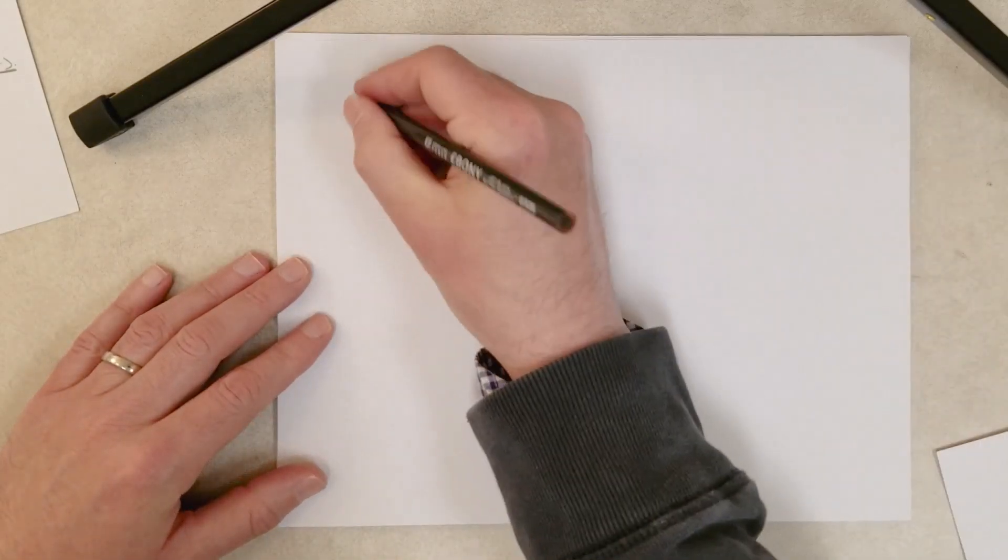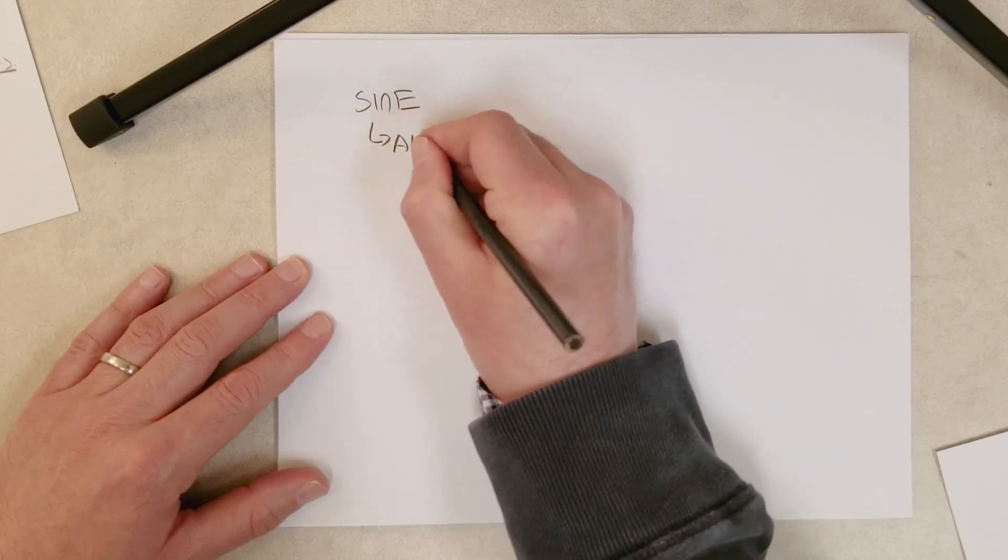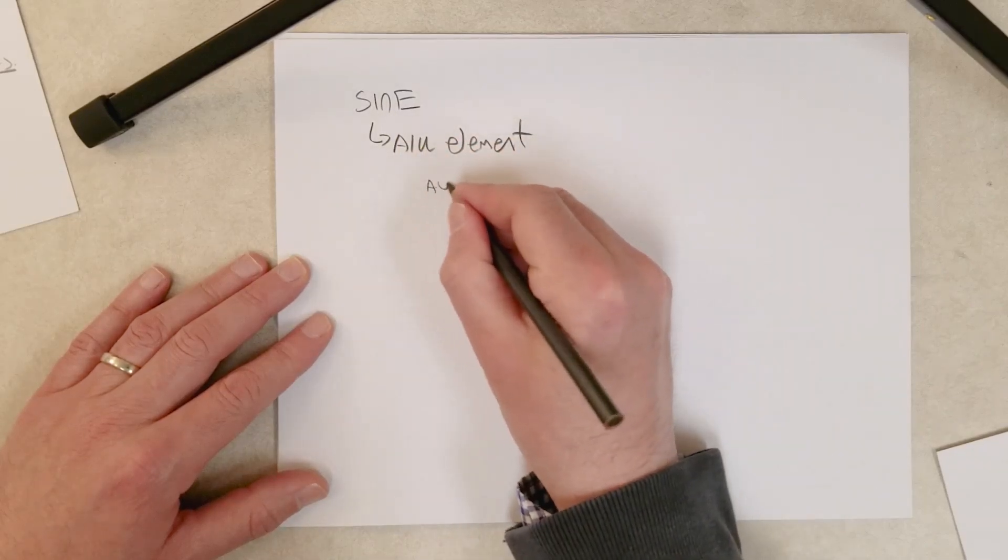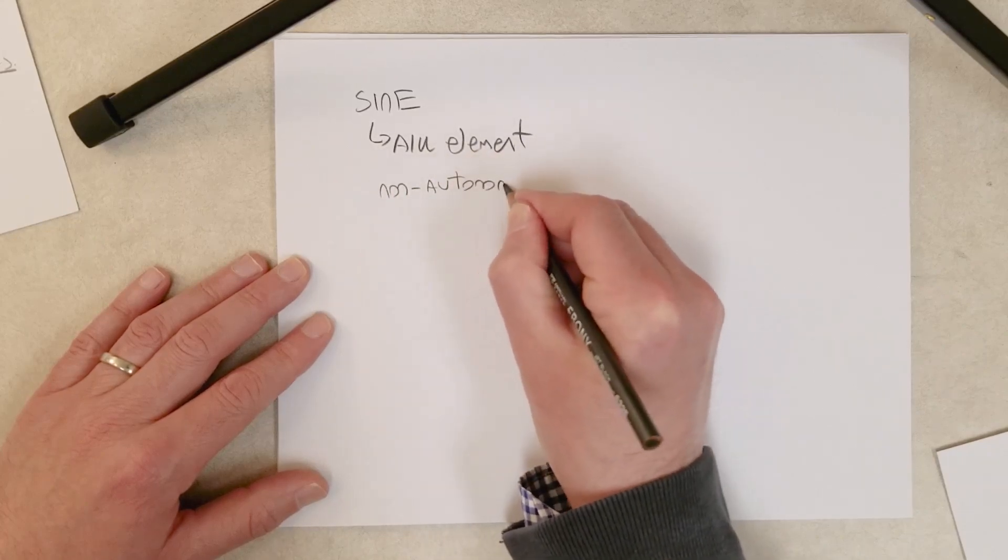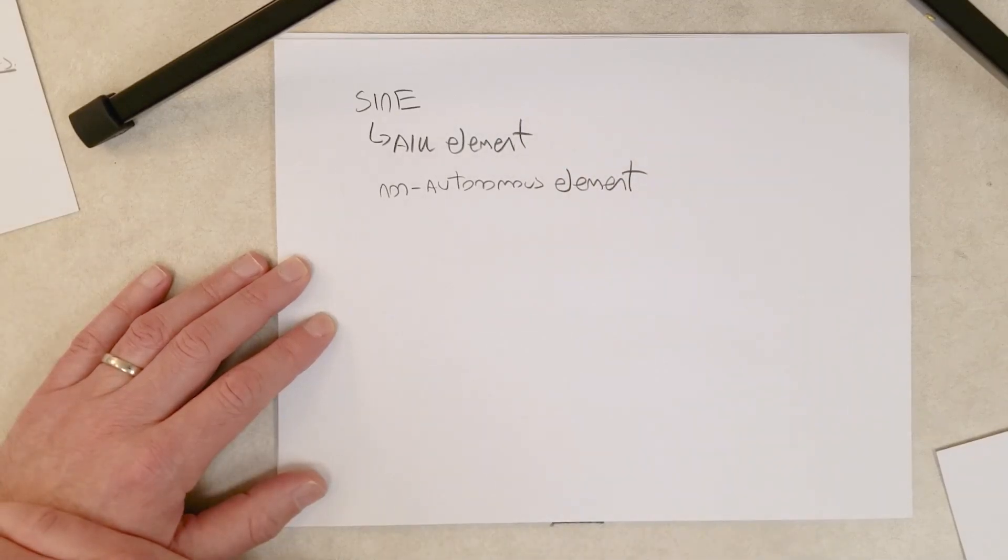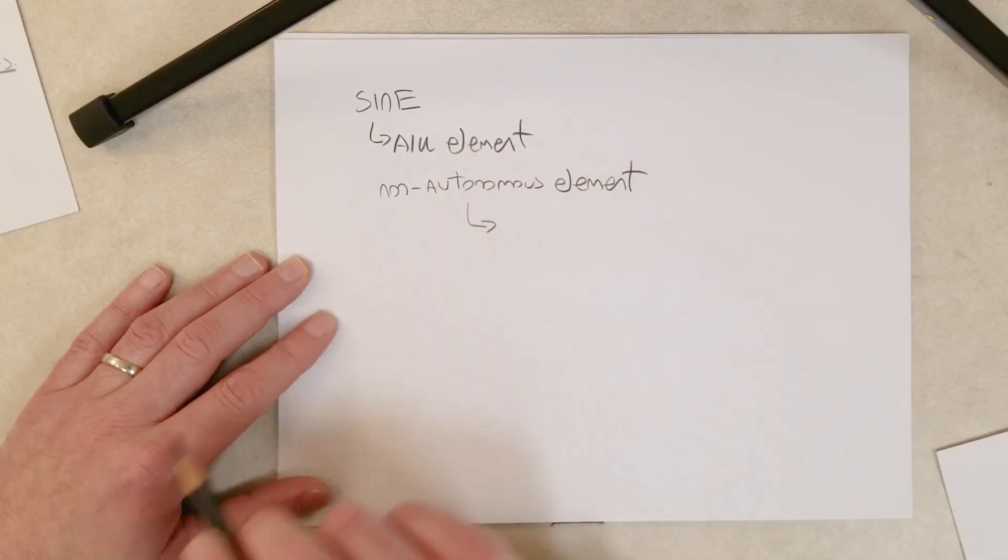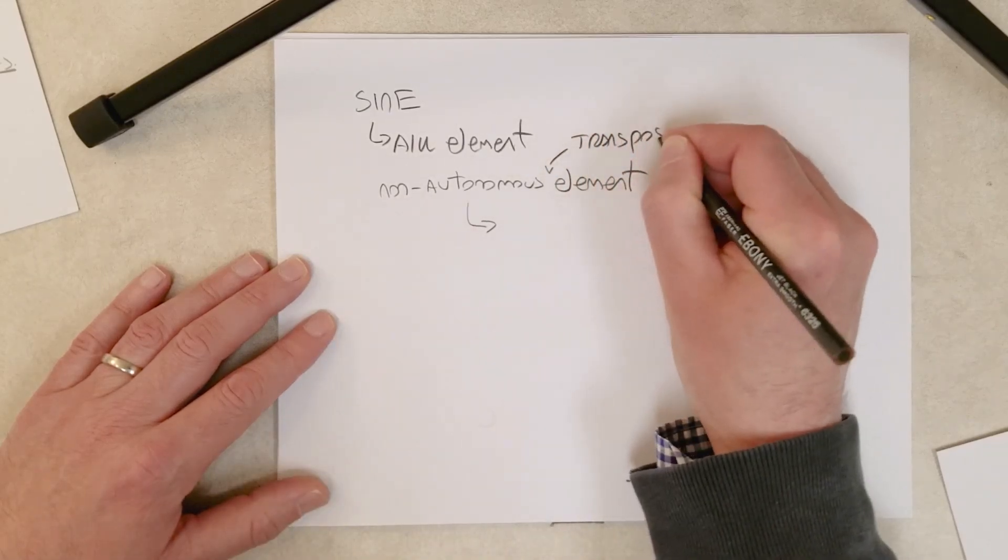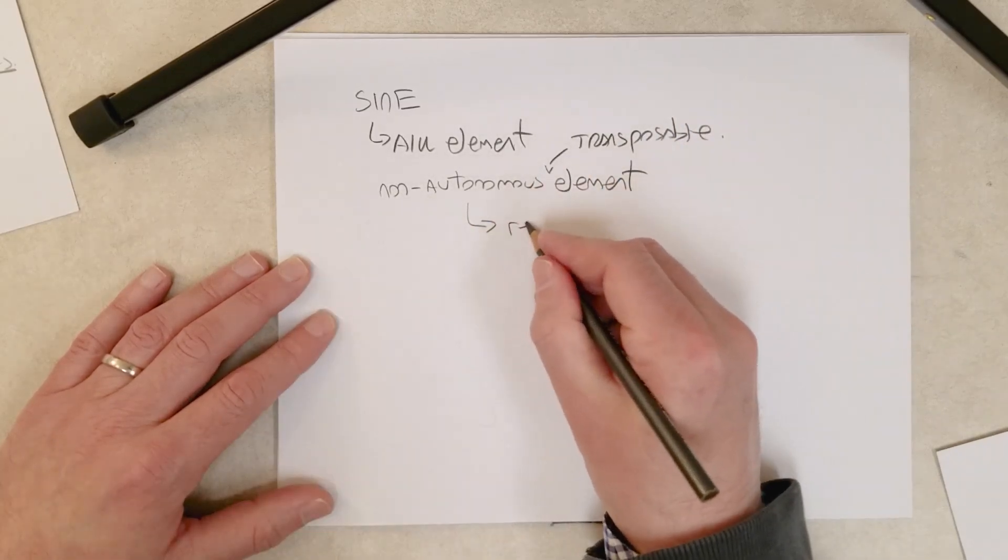ALU is an example of a SINE, and like most SINEs, ALU is what we call a non-autonomous element. What does that mean? Essentially, a non-autonomous element or non-autonomous transposable element requires proteins made by other elements.